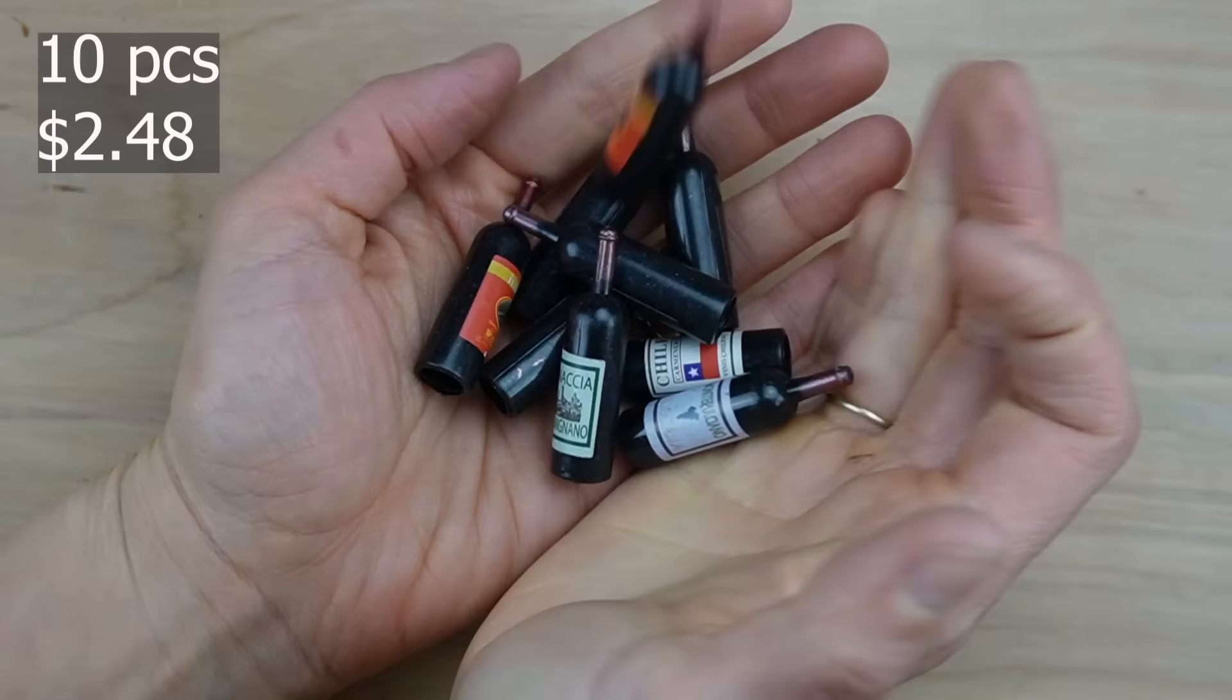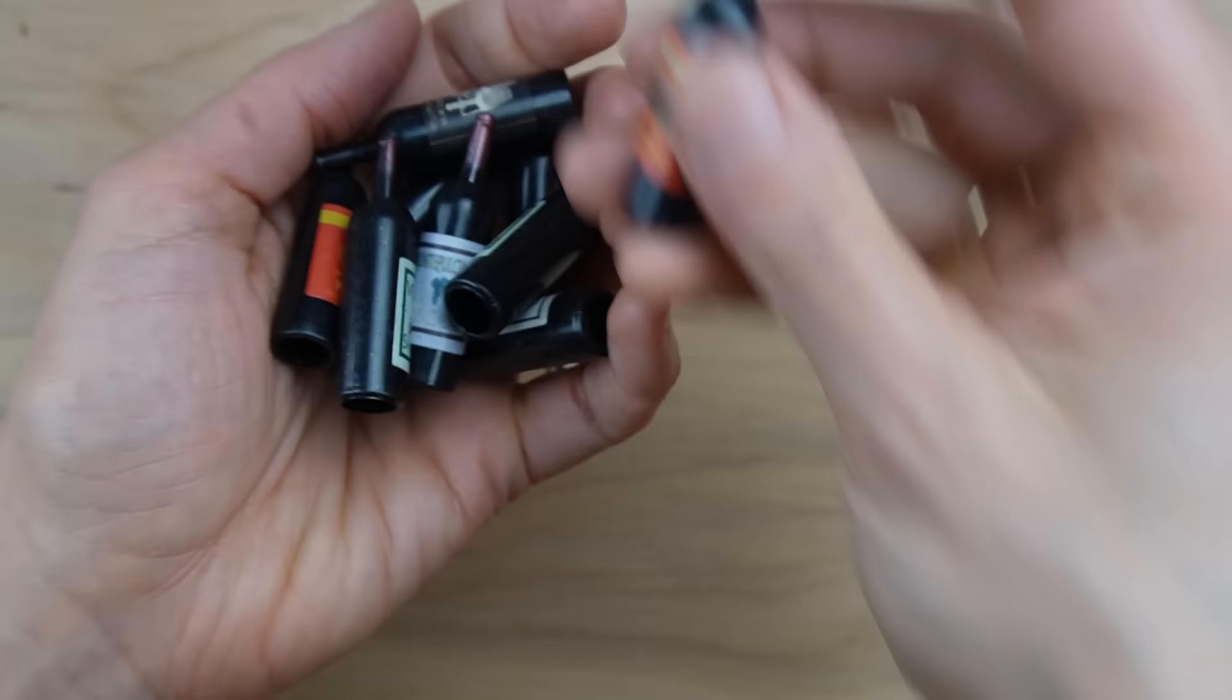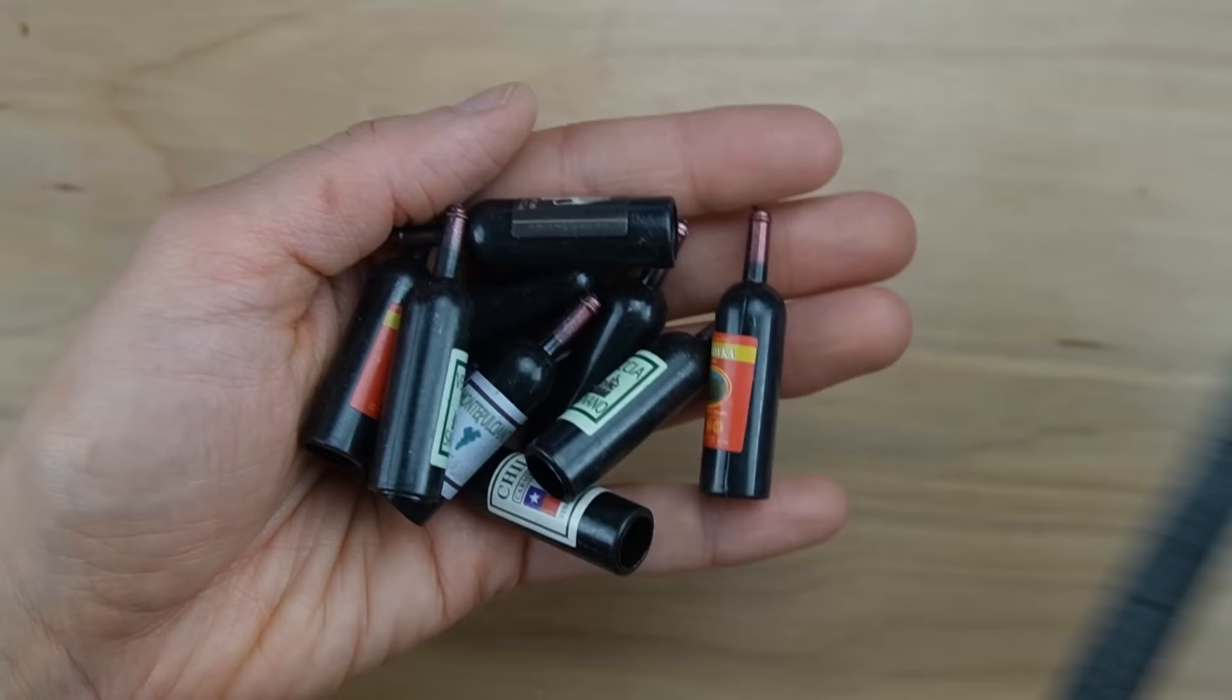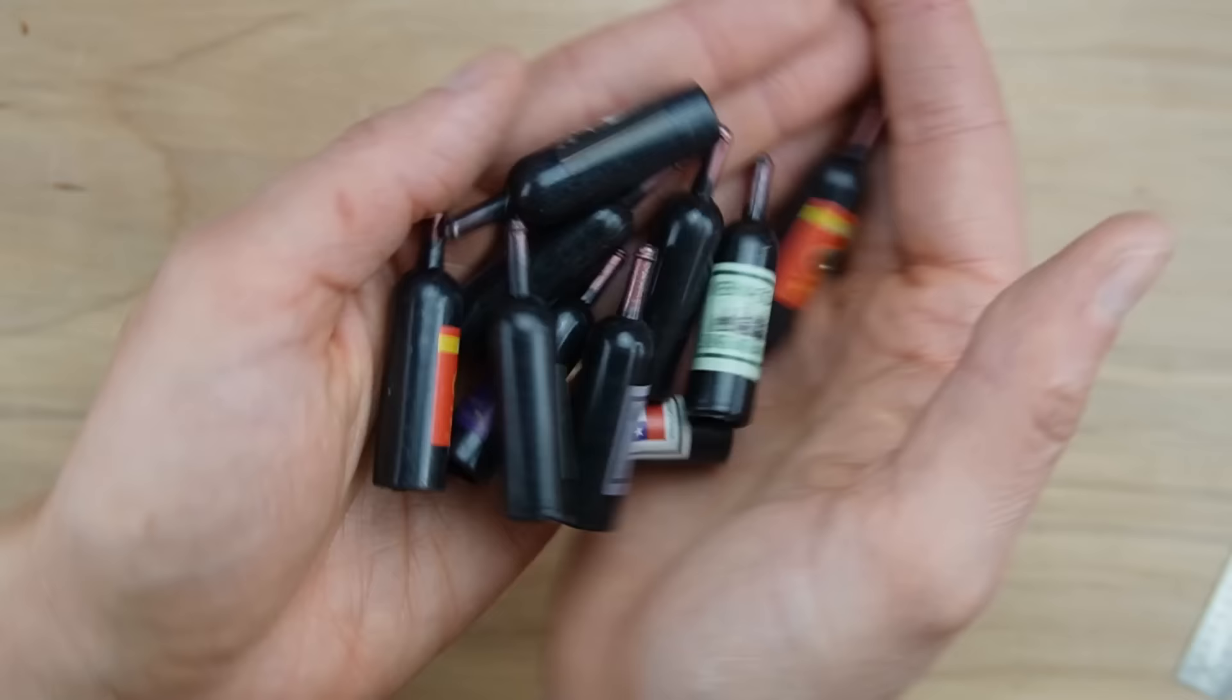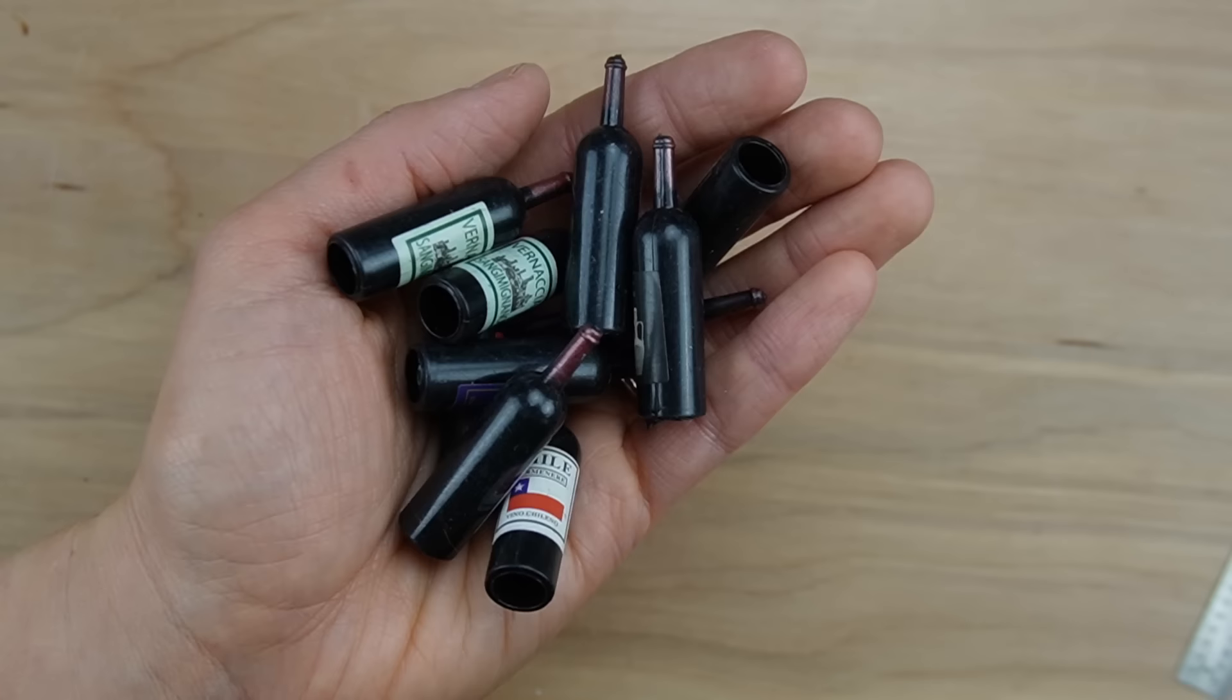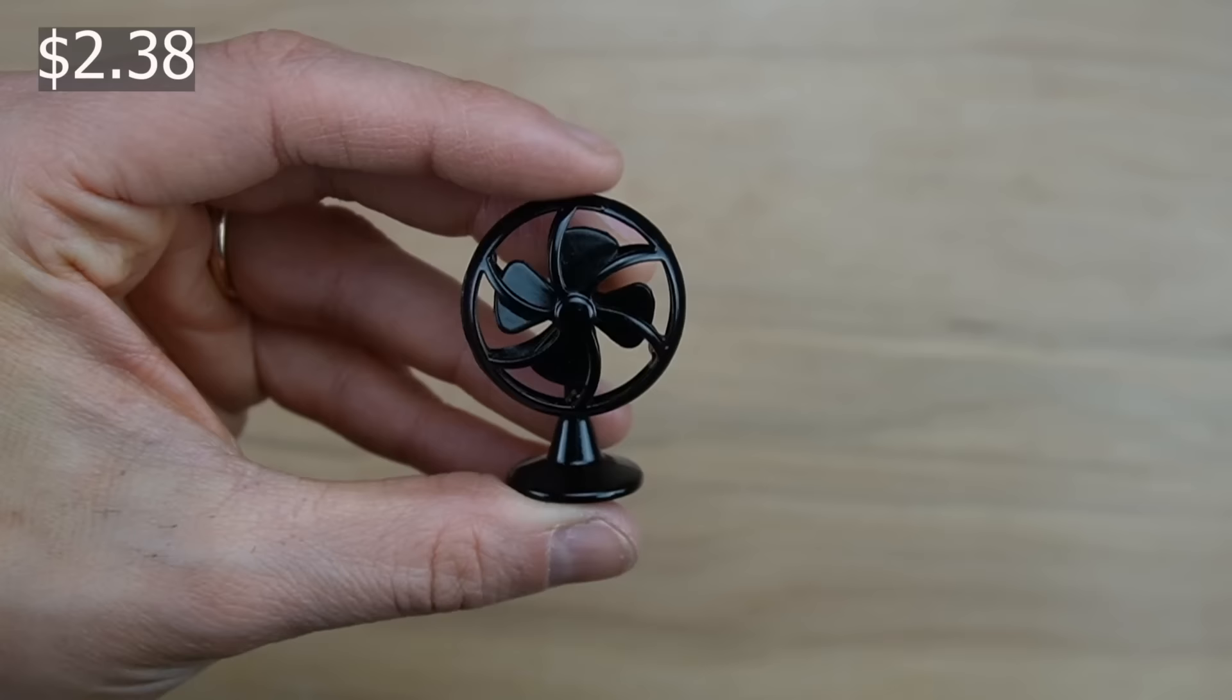When you're shopping for miniatures on Timu, make sure you actually look at the description to see what size things are and they also show photos explaining the size because these are described as 1-12, but they're huge. These one and three quarter inch tall bottles are more like 1-6 scale. But if you have Barbies who drink, these are a good quality and includes 10 of them, so it's a good deal.